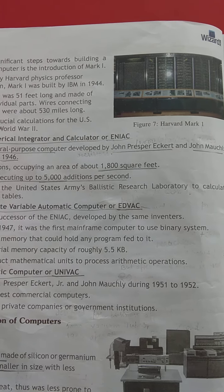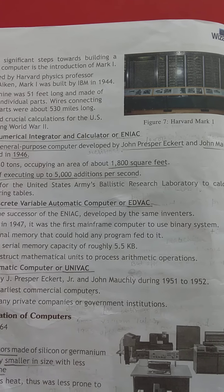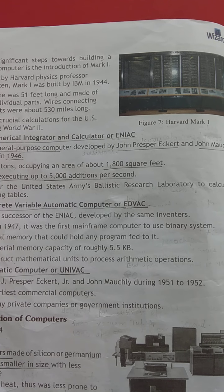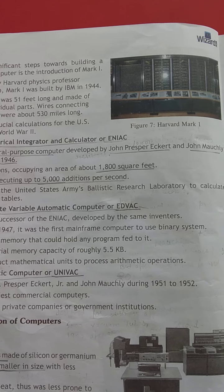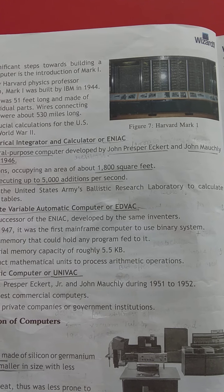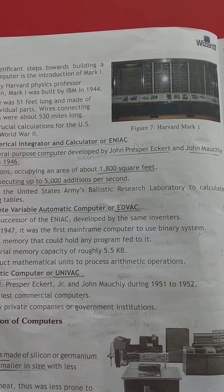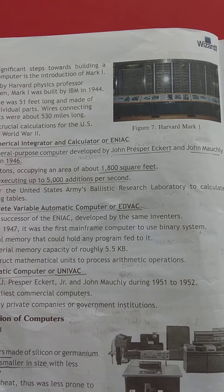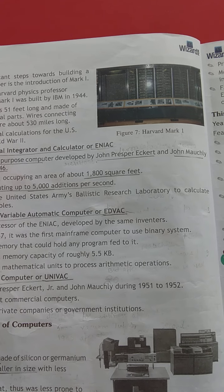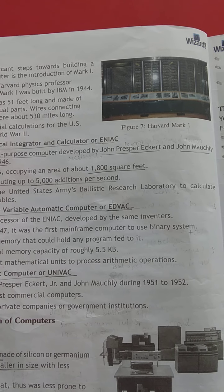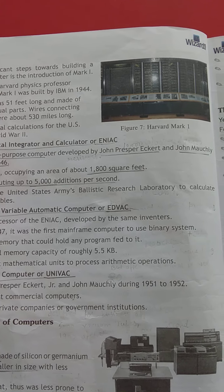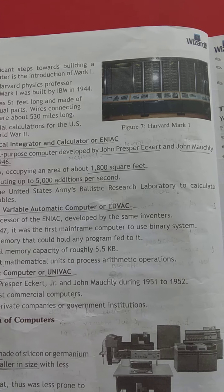Next is UNIVAC — Universal Automatic Computers — also developed by John Eckert and John Mauchly in 1951 to 1956. It was designed for business purposes. UNIVAC used 5,000 vacuum tubes.